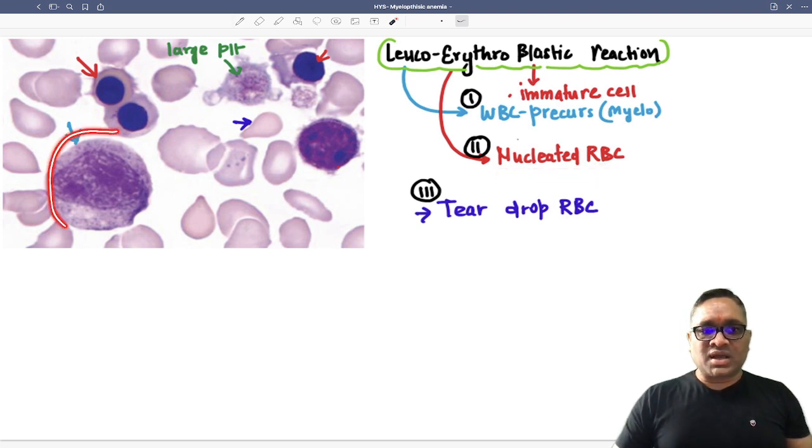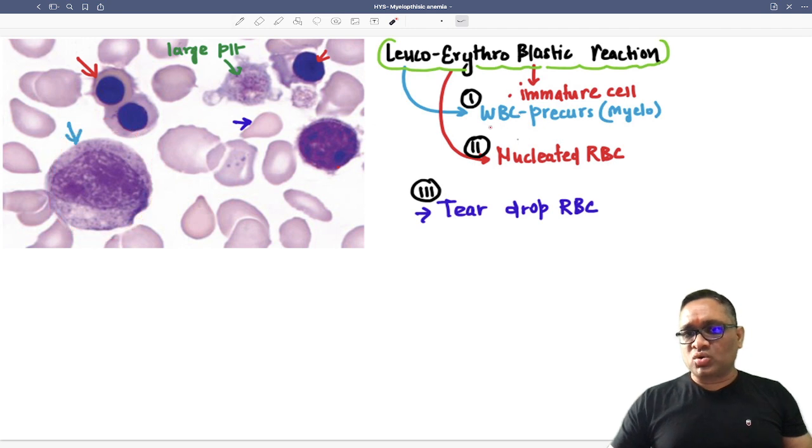And the same way you can see these are the myelocytes. So these are the immature WBC or WBC precursors. So when you find immature RBC and WBC on peripheral smear...